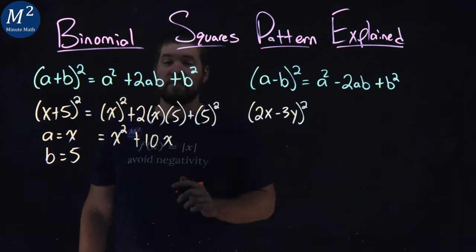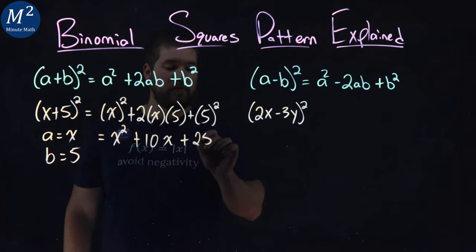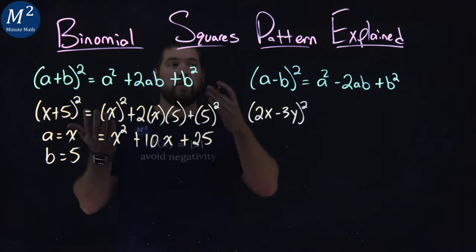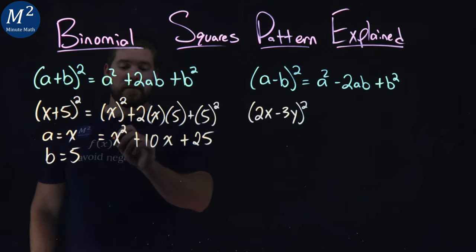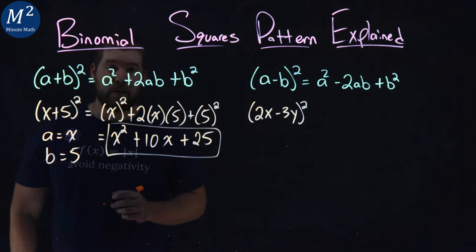And lastly, 5 squared, well, that's a 25. And so using the Binomial Squares Pattern, we can quickly simplify x plus 5 all squared to be an x squared plus 10x plus 25.